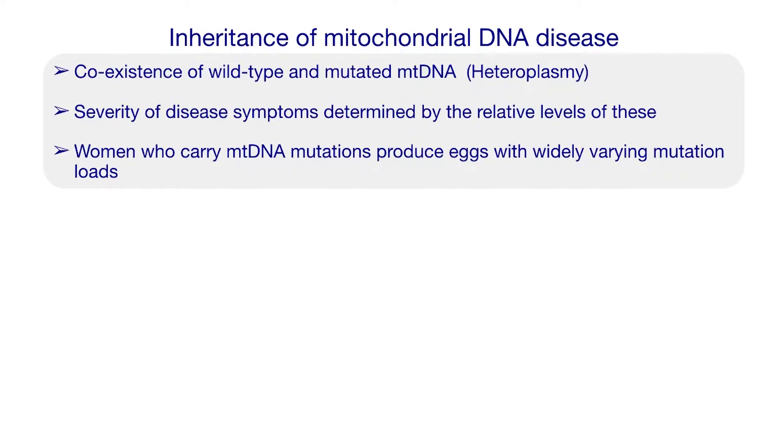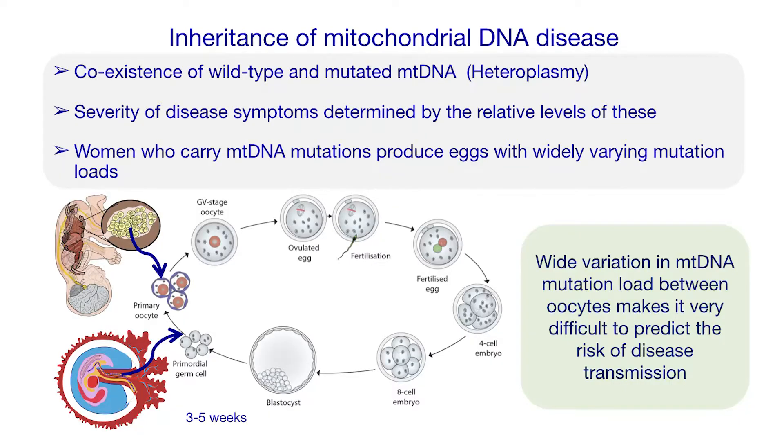If we have mutations in the mitochondrial DNA, it generally affects energy production, largely affecting high-energy-requiring organs such as the brain and the muscle, and can give a broad spectrum of disease. The incidence is about one in 5,000, and in the worst cases children die before reaching the age of five. The inheritance of mitochondrial DNA is complicated by the fact that mutated mitochondrial DNA coexists in our cells with wild-type DNA, and it is the relative levels of these two that determines the severity of disease. Importantly, women who carry these mitochondrial DNA mutations produce eggs with widely varying mutation loads, making it very difficult to predict the risk of disease in children born to these women.